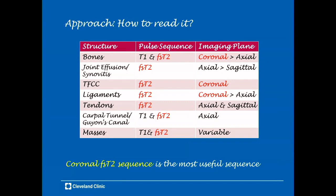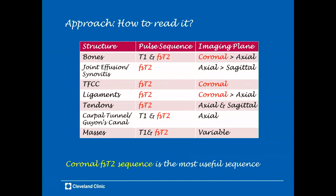Here's a table listing the different pulse sequences typically acquired with a wrist MRI, the imaging planes they're acquired in, and what I find most useful when evaluating each of these structures. For most structures, the most useful pulse sequence is a fat-saturated T2-weighted or fluid-sensitive sequence, and the most common imaging plane is coronal. If you had only one sequence, the coronal fat-saturated T2-weighted sequence is your most useful.